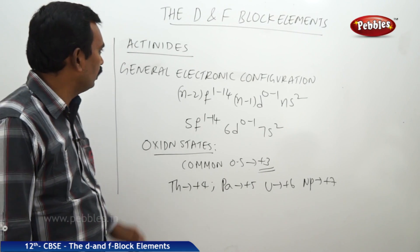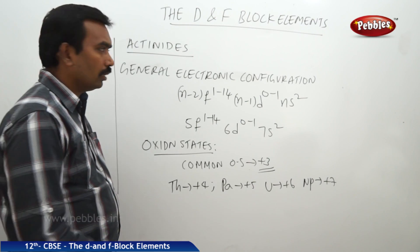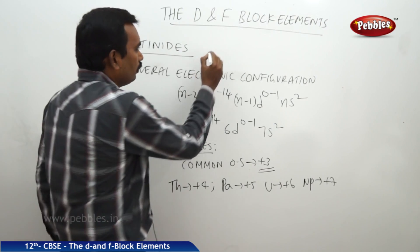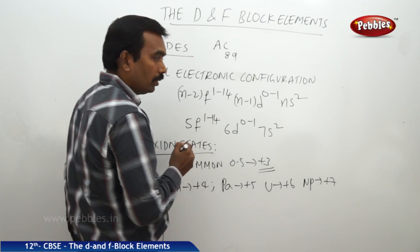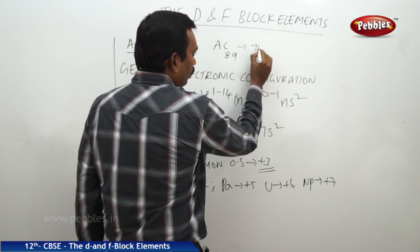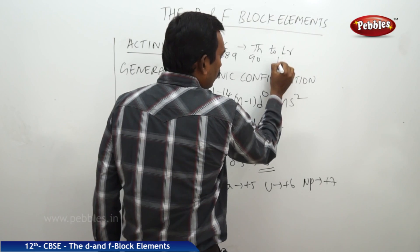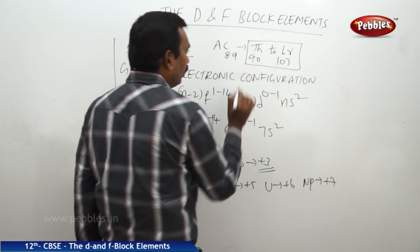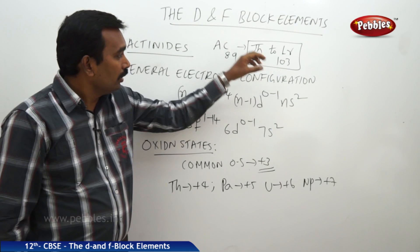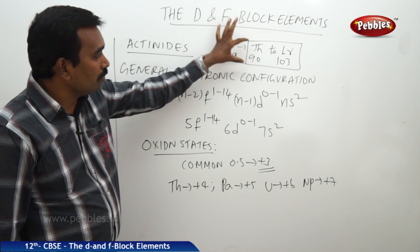In this chapter, we will discuss about actinides. Actinides are the elements that come after actinium, from thorium to lawrencium. Actinium has atomic number 89, and the elements that follow — thorium (90) to lawrencium (103) — are 14 elements. These elements are called actinides because they come after actinium.